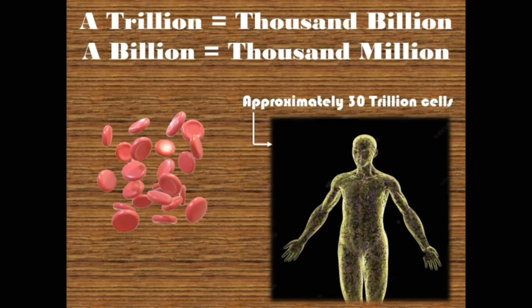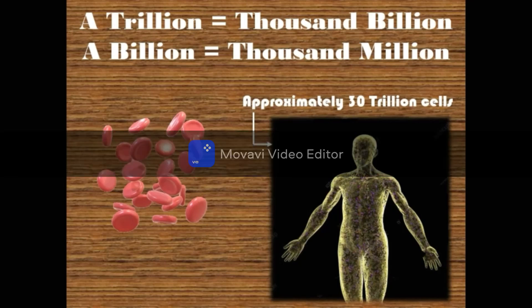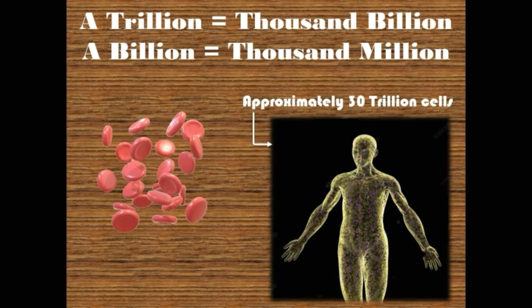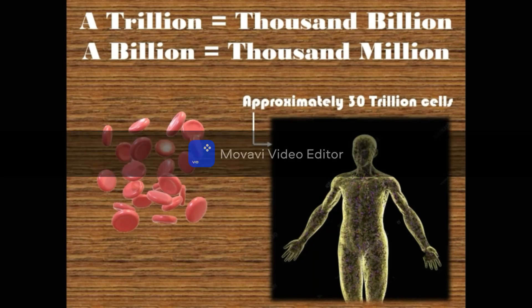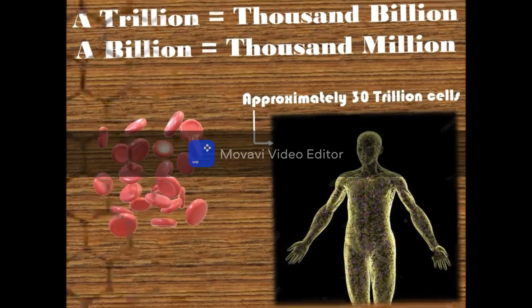The average human body consists of approximately 30 trillion cells. Human body replaces millions of cells every day. Cells are always being created and destroyed in the human body. Approximately 20 million cells are replaced in just a few seconds in the human body. Now you can understand how interesting it is.